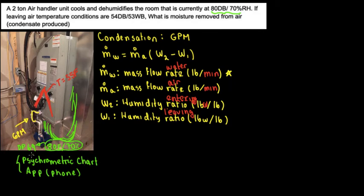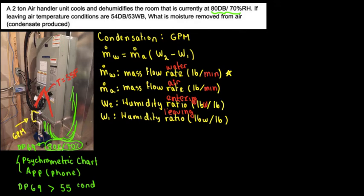Since the dew point of the air is 69°F and this dew point is greater than the coil temperature of 55°F, there is condensation. That water has to go somewhere, which is why we have a condensate line and a condensate pump — to pump it outside, especially in tight spaces where there are no floor drains. That's why they install a condensate pump like a Little Giant.